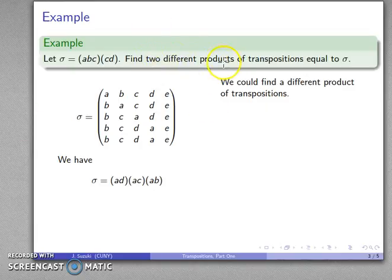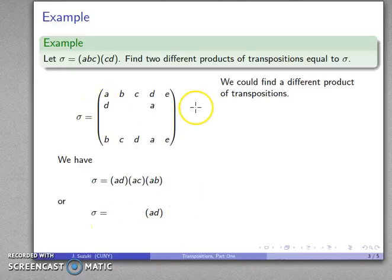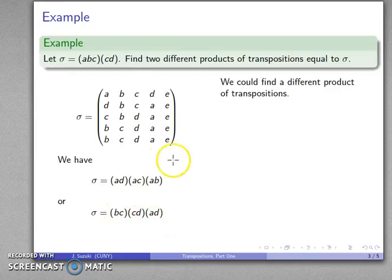The permutation is the product of transpositions (A, B) followed by (A, C) followed by (A, D). Now let's wipe out that sequence and try to find a different one. This time I'll work from the other end — I'll try to get A into the last position, so I swap A and D. That's my first transposition, (A, D), and all others stay in place. Now I want D in the third position, so I swap D and C. Then I want C in the second position, so I swap C and B. That gives me the product (A, D) followed by (C, D) followed by (B, C) — two very different products of transpositions that give exactly the same permutation.